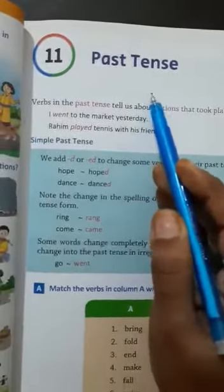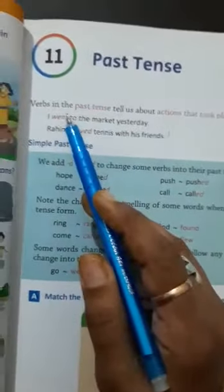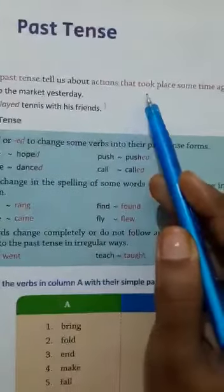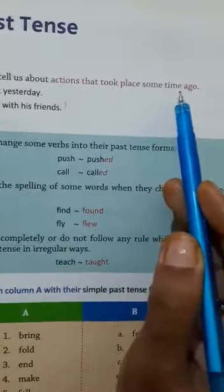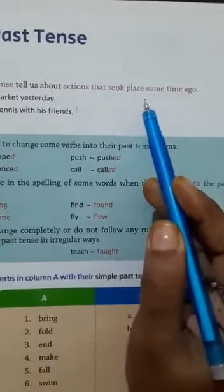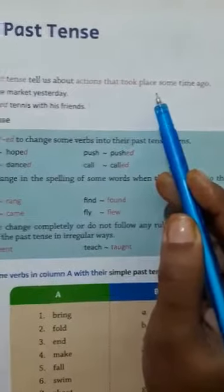Here you will learn about past tense. Words in the past tense tell us about actions that took place some time ago. Actions that happened before some time, that is past tense.